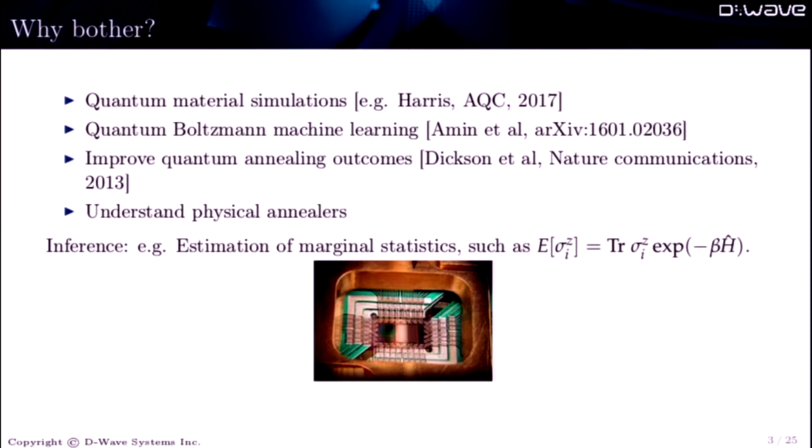So what does inference mean in the context of quantum Boltzmann machines? One of the tasks you may be interested in is estimating marginal statistics, like the probability that a state is plus one relative to minus one. And so the expectation of sigma I Z is just a trace of the sigma I Z operator with respect to this Boltzmann distribution, normalized as well.